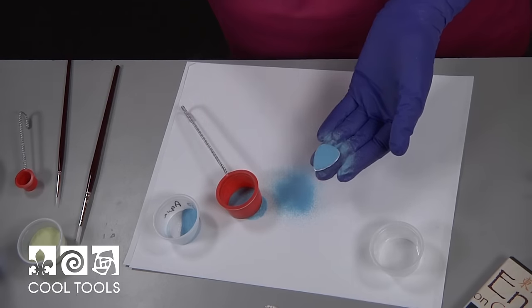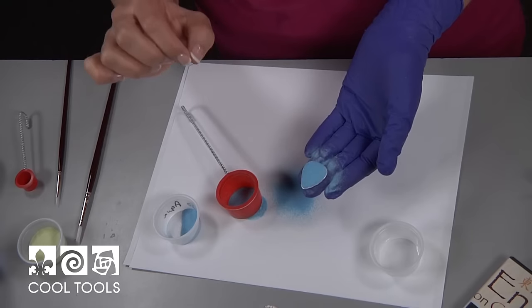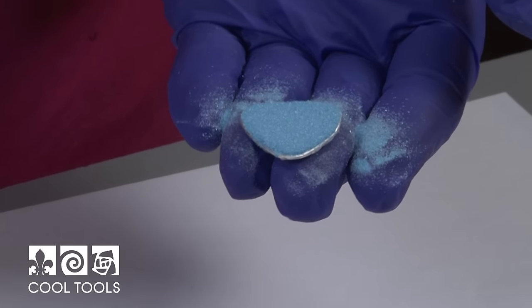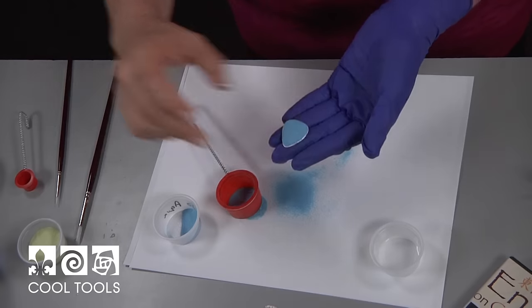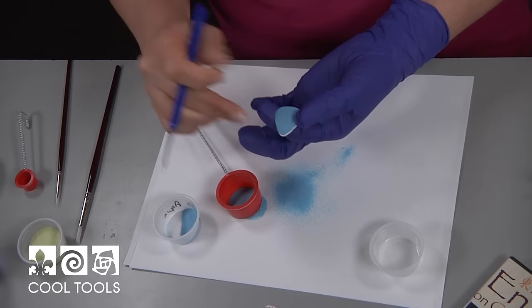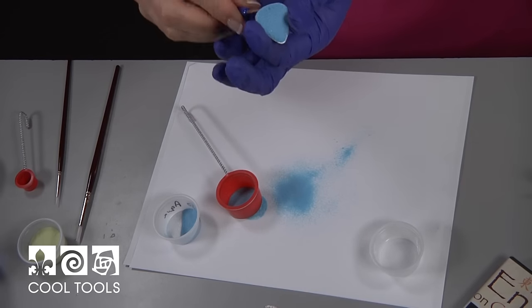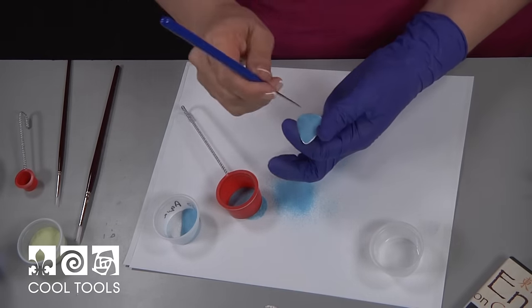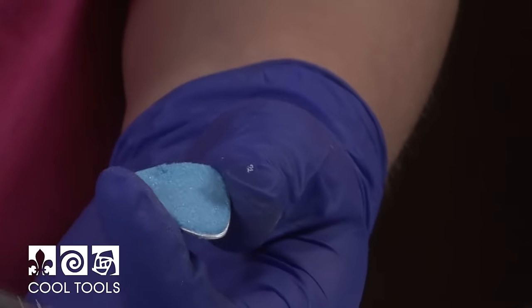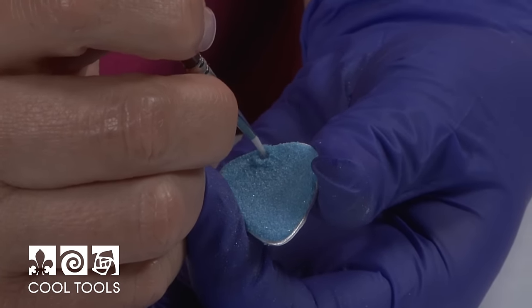One thing you want to avoid is what I just did, and that's covering up the hole with enamel. If I fire it like this and I end up with enamel in that hole, I'm not going to be able to put it on a jump ring later. I'm going to take a scribe and poke it up through that hole. It's kind of easier to see it from the other side. I'll use a damp brush to make sure I don't have any enamel blocking the hole.